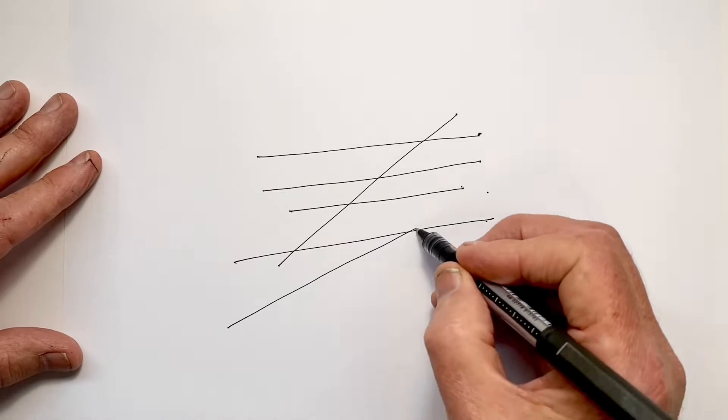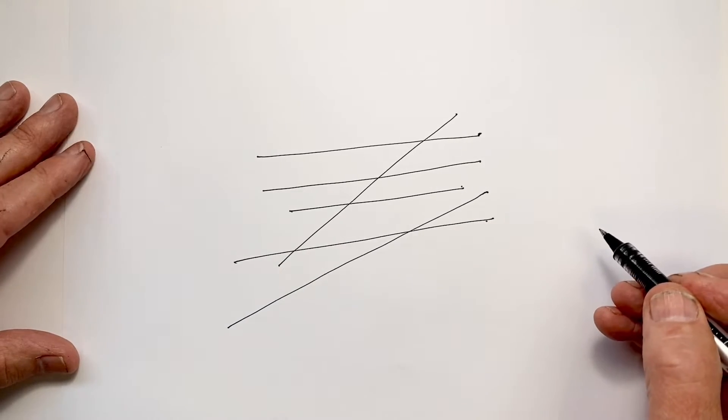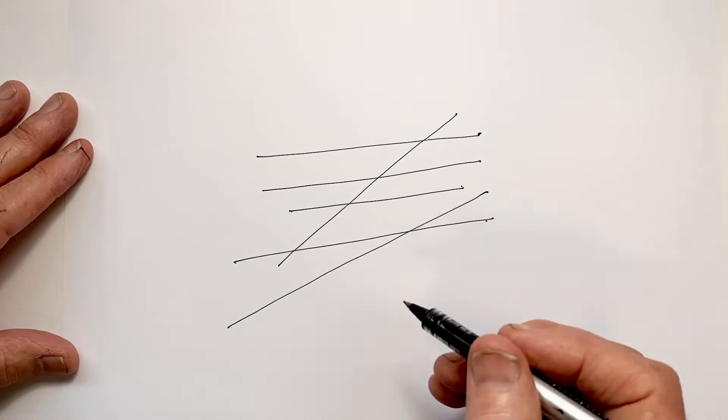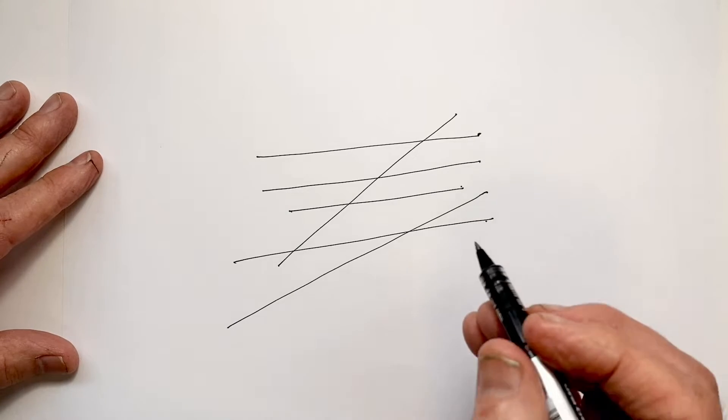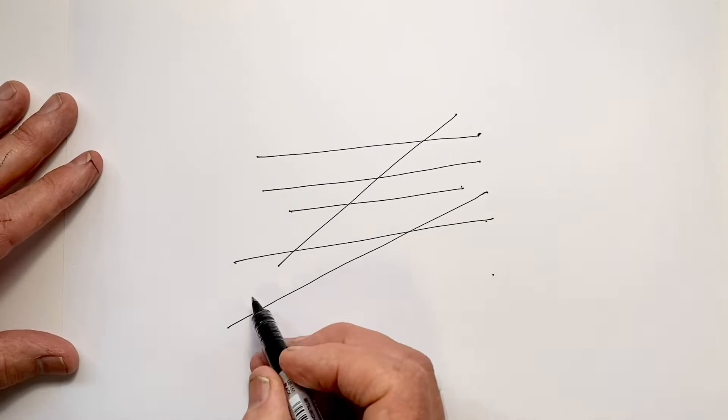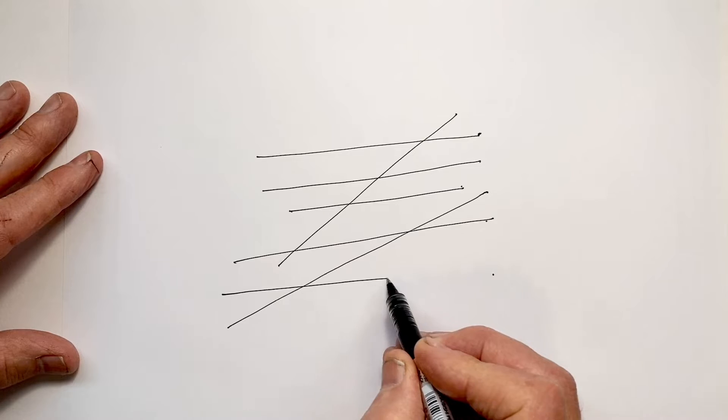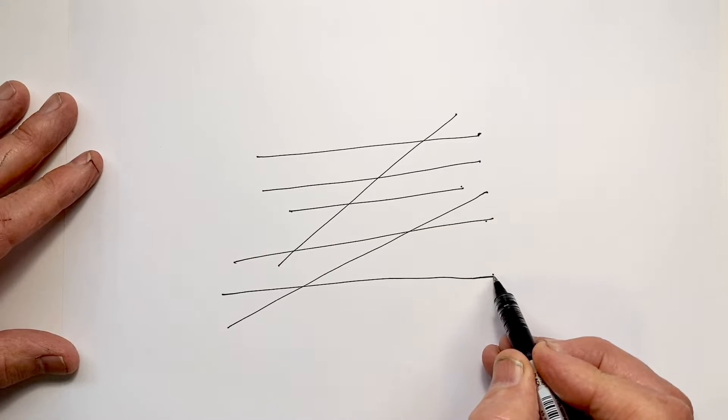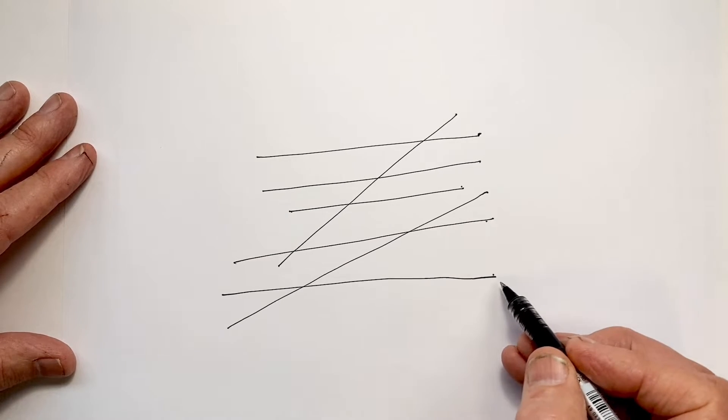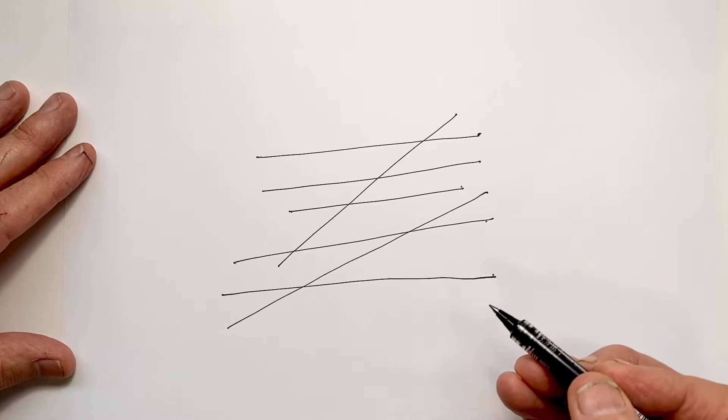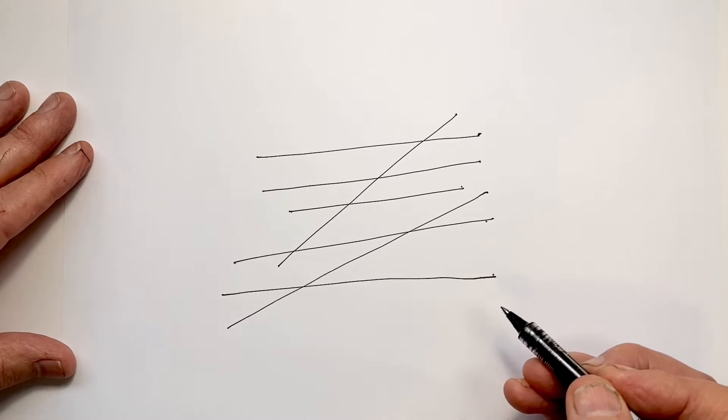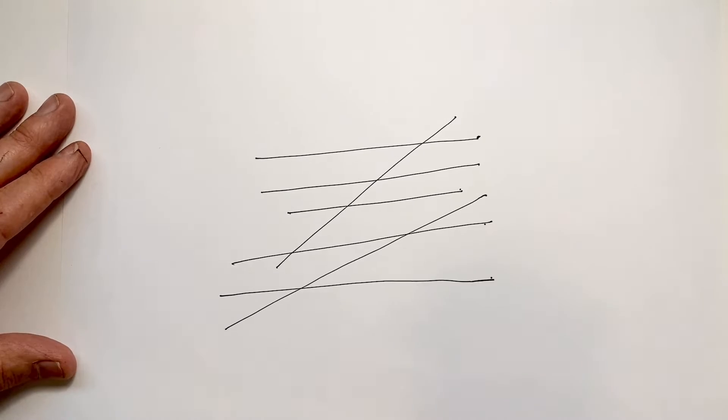Practicing doing this, especially with some quite long lines, is a very helpful exercise. It's important not to slow down too much as we approach our dot. That will often produce a heavier line because the longer our pen is in contact with the paper, often the more ink that will flow into the paper.